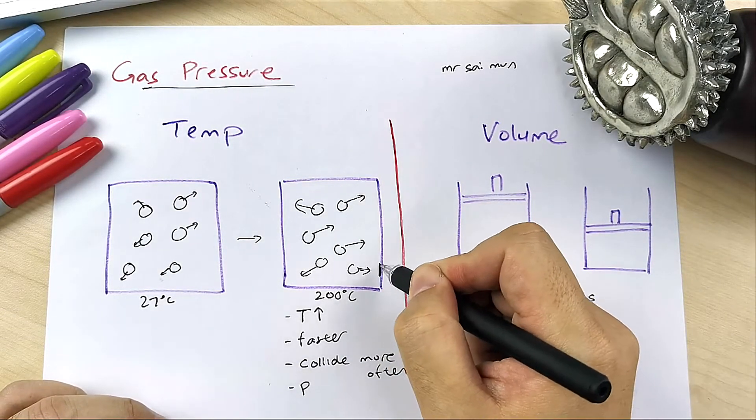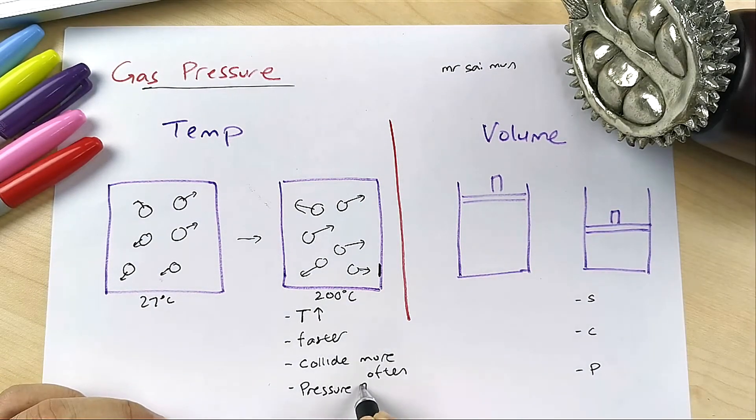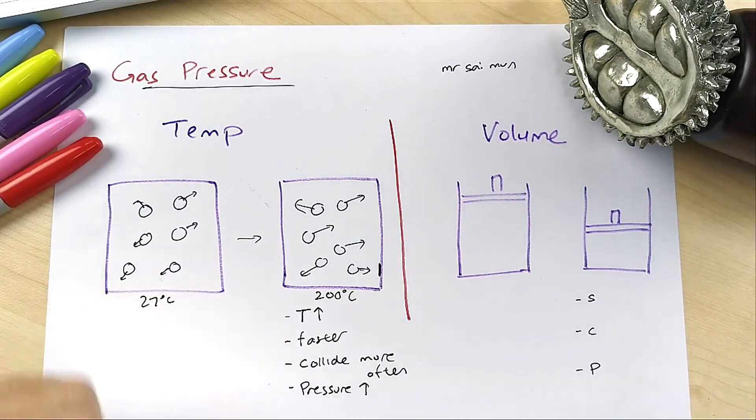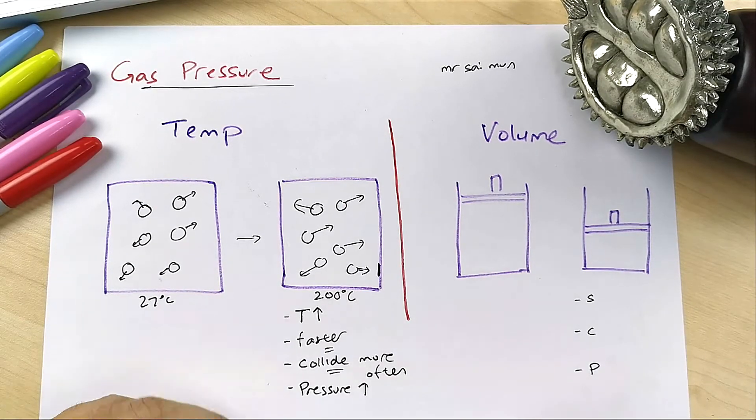They hit onto the wall, therefore higher pressure. The keywords are 'faster' and 'collide more often'. For a two marks question, make sure you write these to get it.